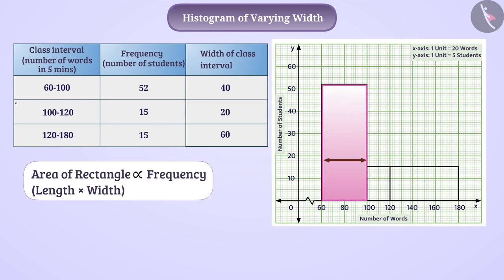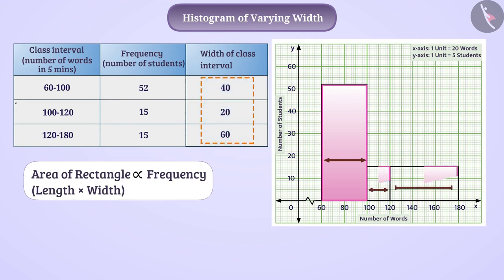The width of the rectangles depends on the class width. The class widths here are different, therefore the width of the rectangles will also vary. If we want the area of rectangles to be proportional to the frequency, we must change the width or length of the rectangles.